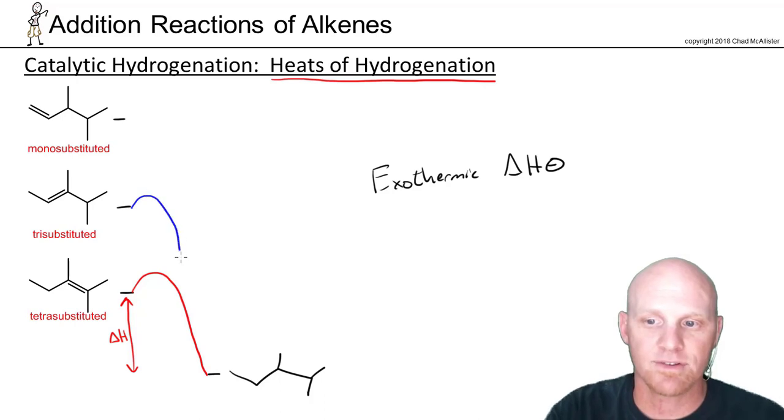So in the next one, we can see it's going to have an even more negative delta H. And then finally, for the least stable alkene, the least substituted in this case, it's going to have the most exothermic delta H. So the most exothermic hydrogenation reaction.